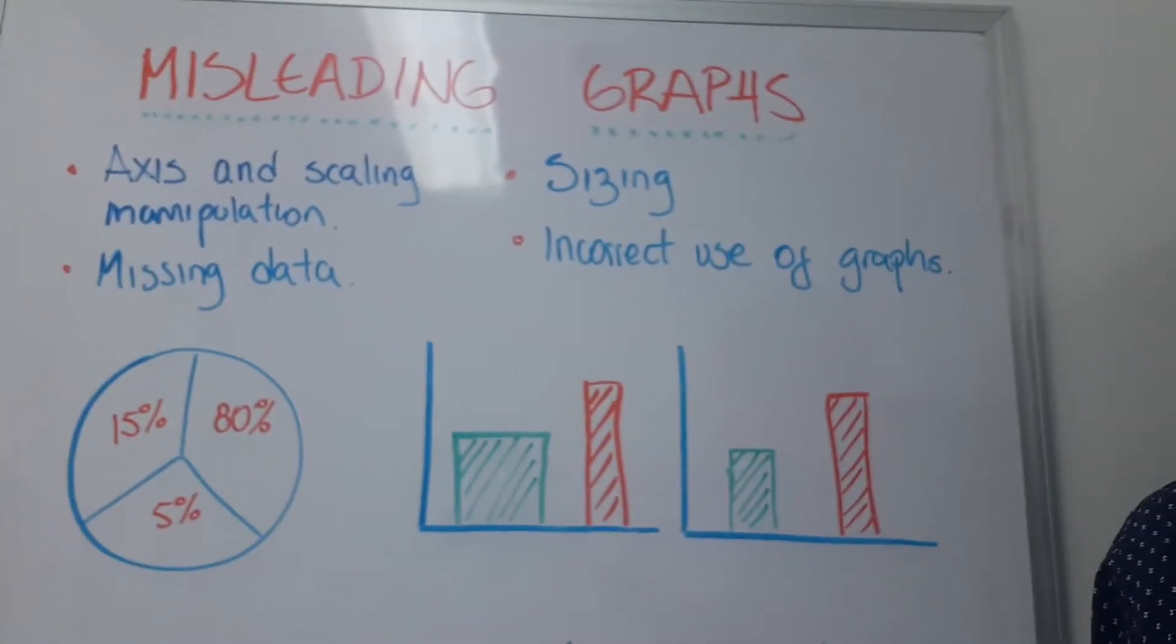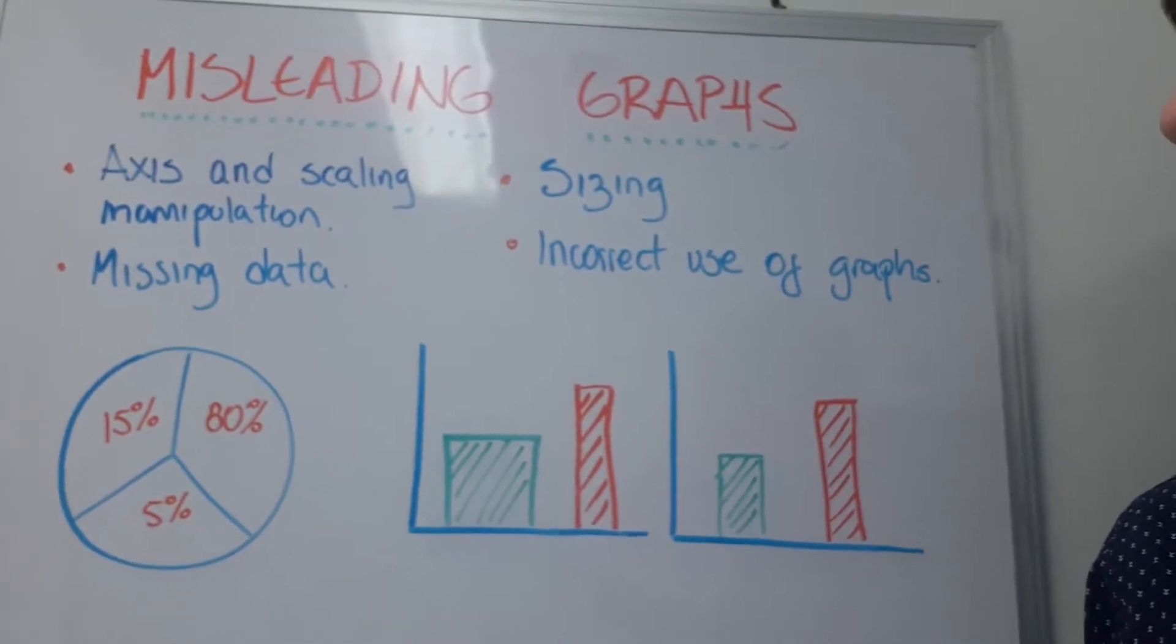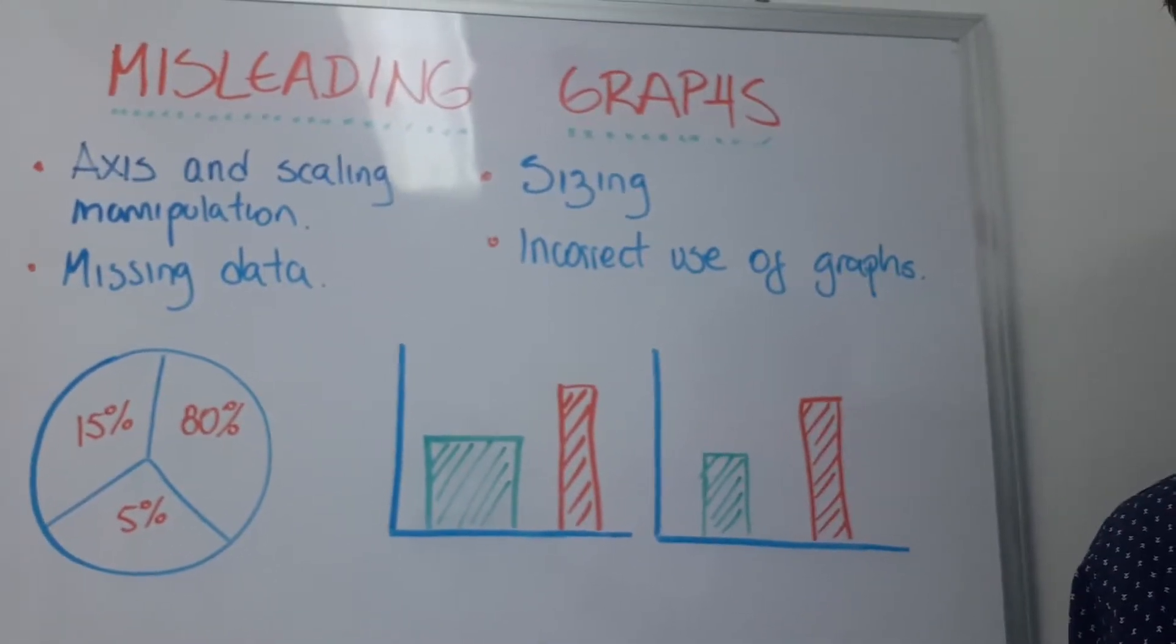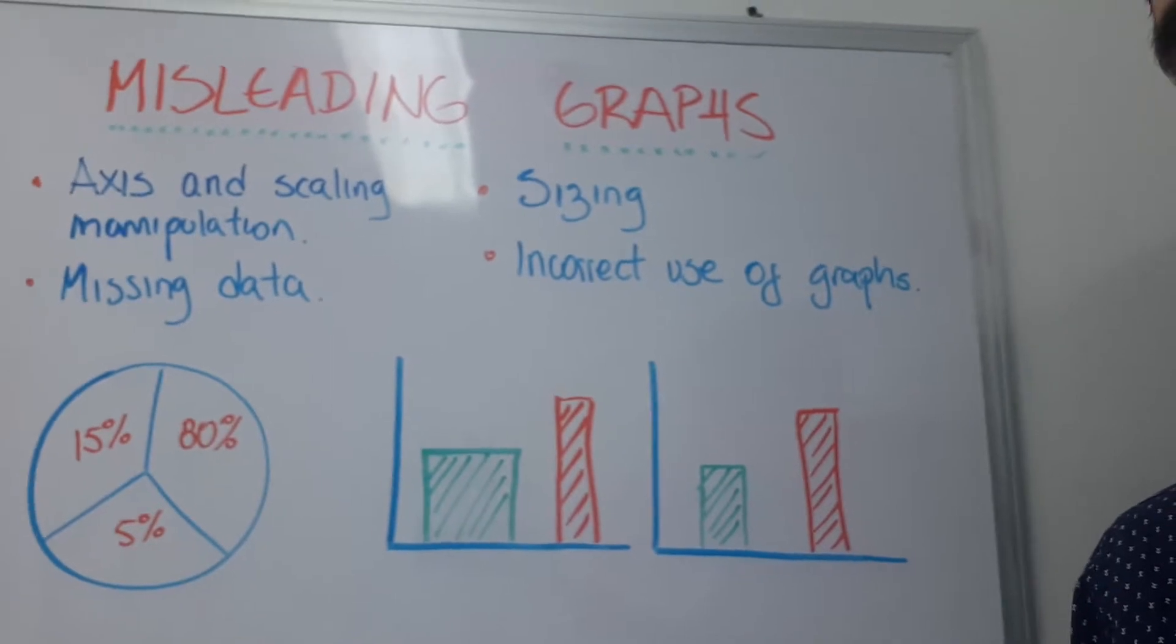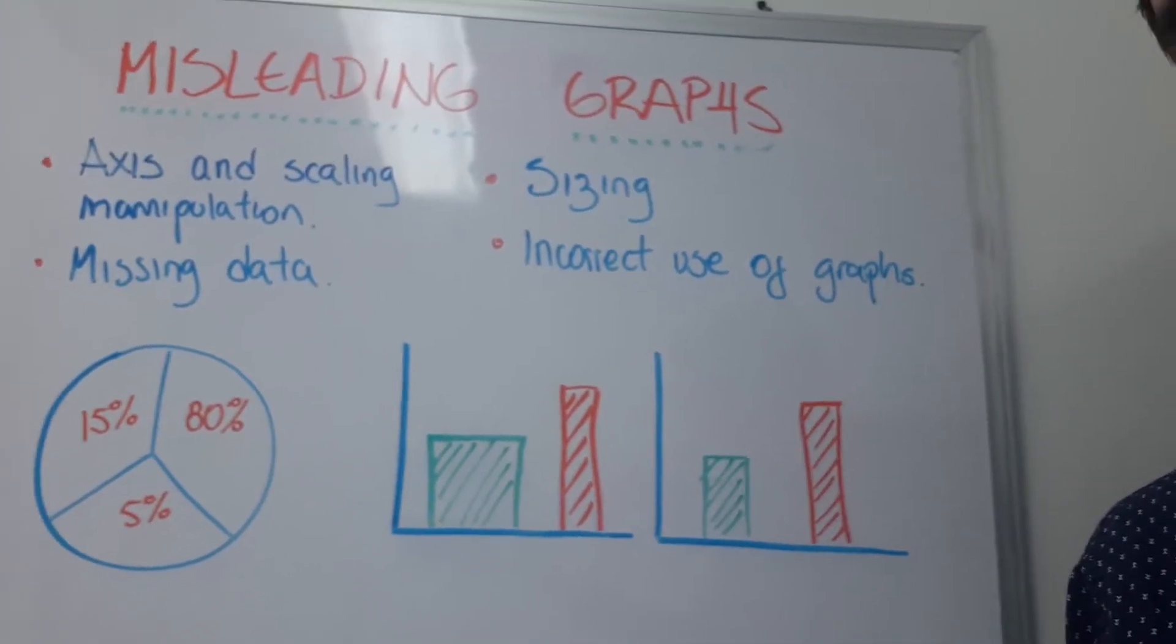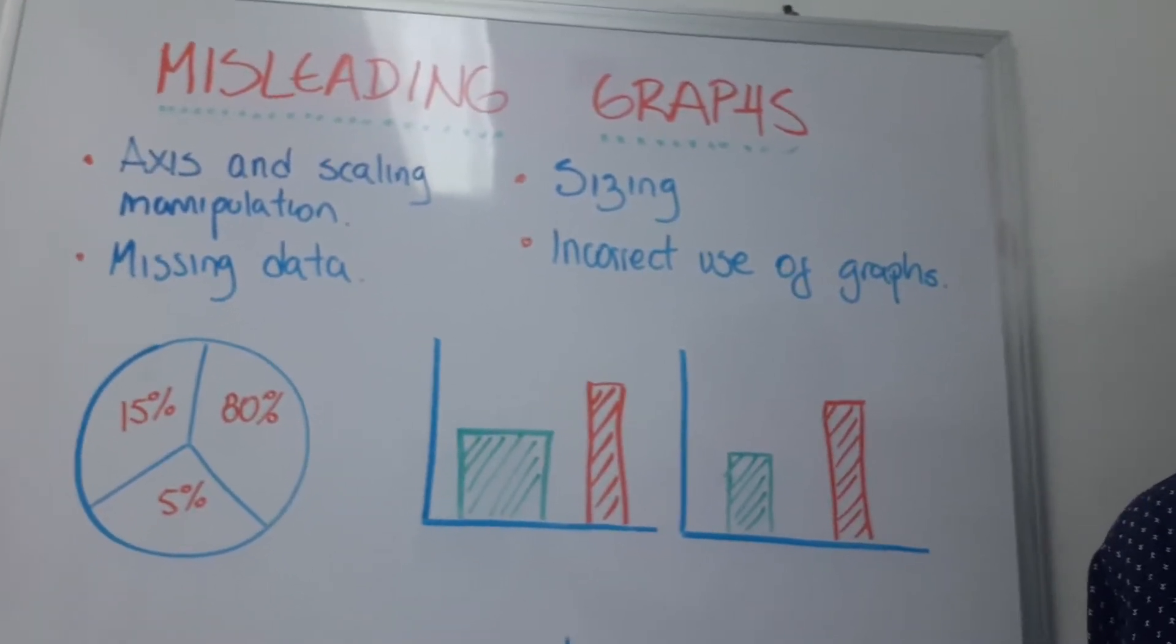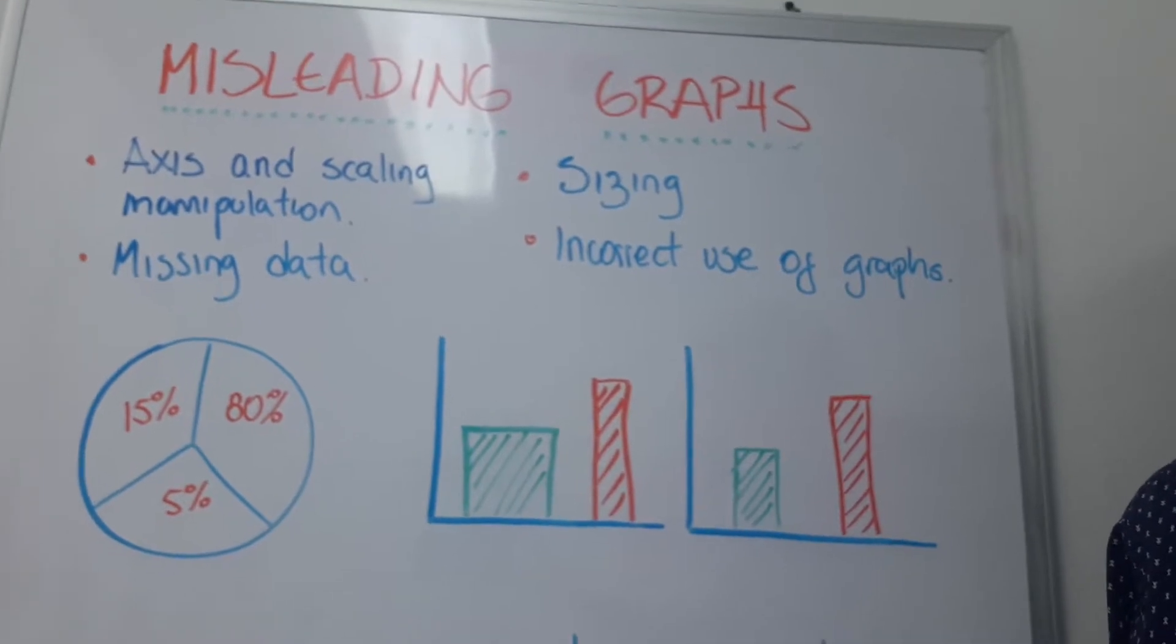another is manipulating the sizing of the graphs or the bars, that is very common, and another one is the incorrect use of graphs because sometimes we choose a graph that is not adequate to show that kind of data or behavior of the results.